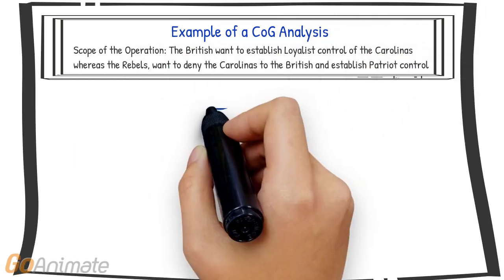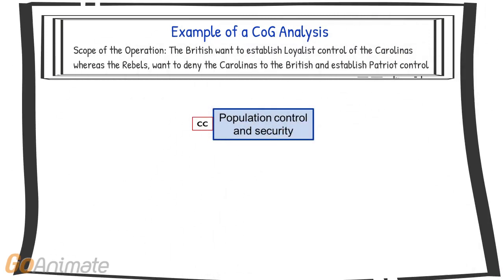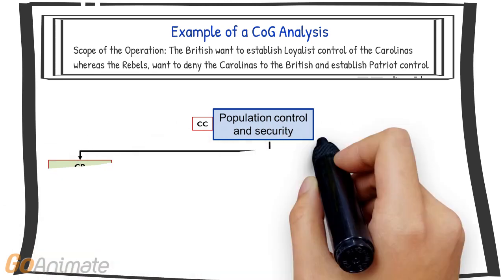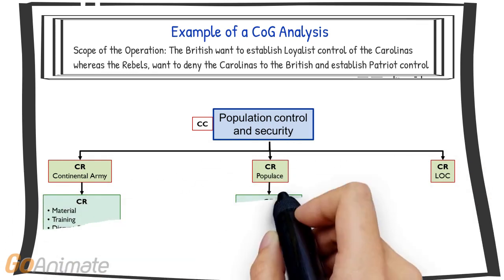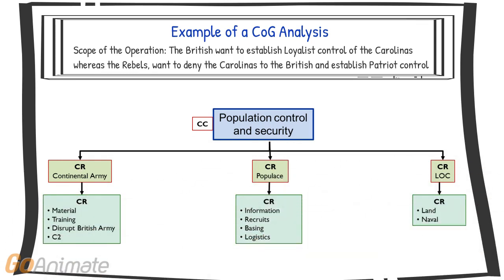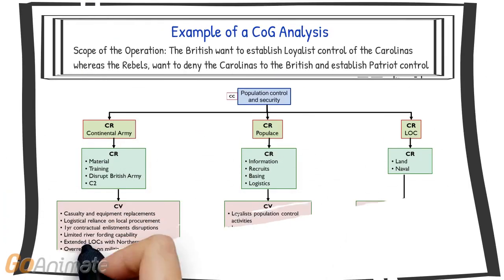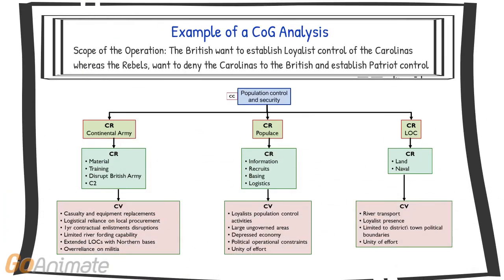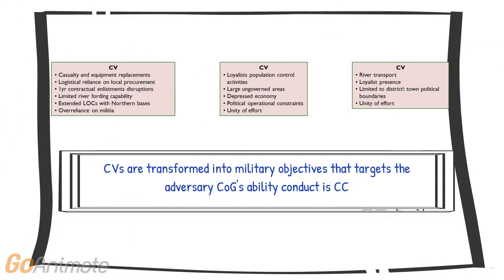In analyzing the rebels, to accomplish their desired end state, they must establish control and security of the populace — the critical capability. To accomplish this task, the rebels require certain conditions, resources, and means — the critical requirements. The analyst analyzes each of the critical requirements to identify inherent vulnerabilities. These critical vulnerabilities become military objectives along the various lines of operation or effort that focus on disrupting the center of gravity.